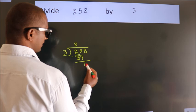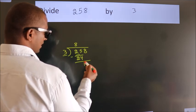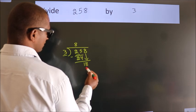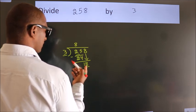subtract. We get 1. After this, bring down the next number, so 8 comes down, giving us 18. When do we get